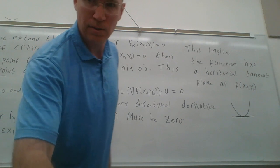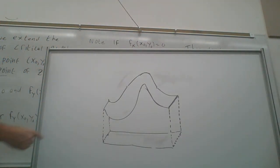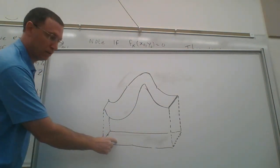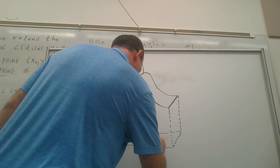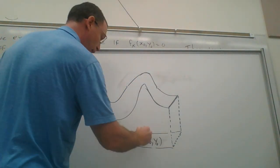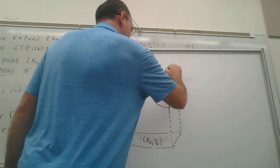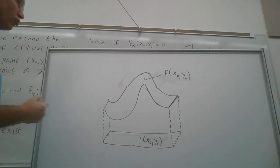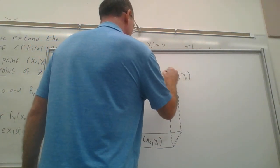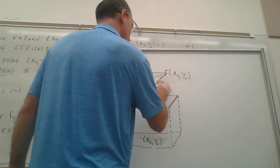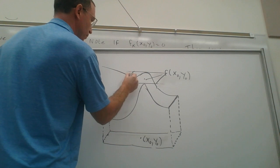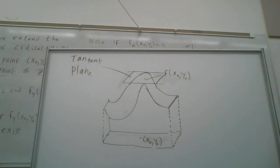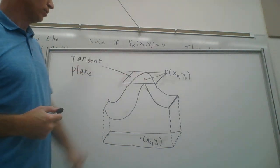Let's look at the picture. Here's a picture of a surface — it looks like we have a max. The xy-plane is down here, and we call this point in the xy-plane (x₀, y₀). When we apply f to it, it maps up to f(x₀, y₀), which is a relative max. If I draw in the tangent plane up there, you can notice the tangent plane is parallel to the xy-plane — it's horizontal.